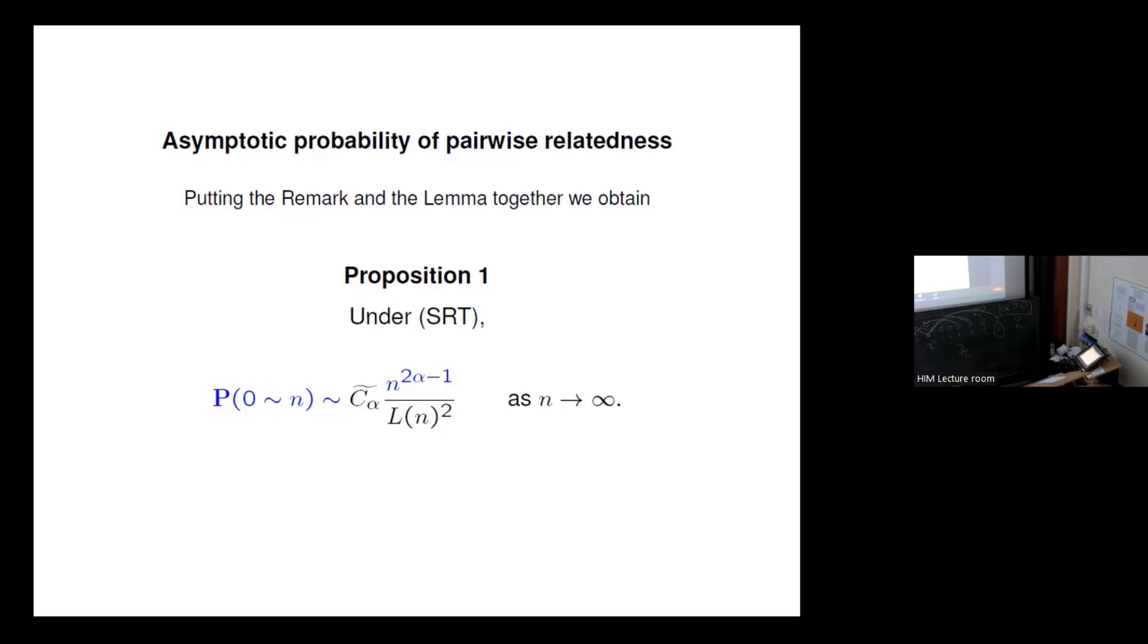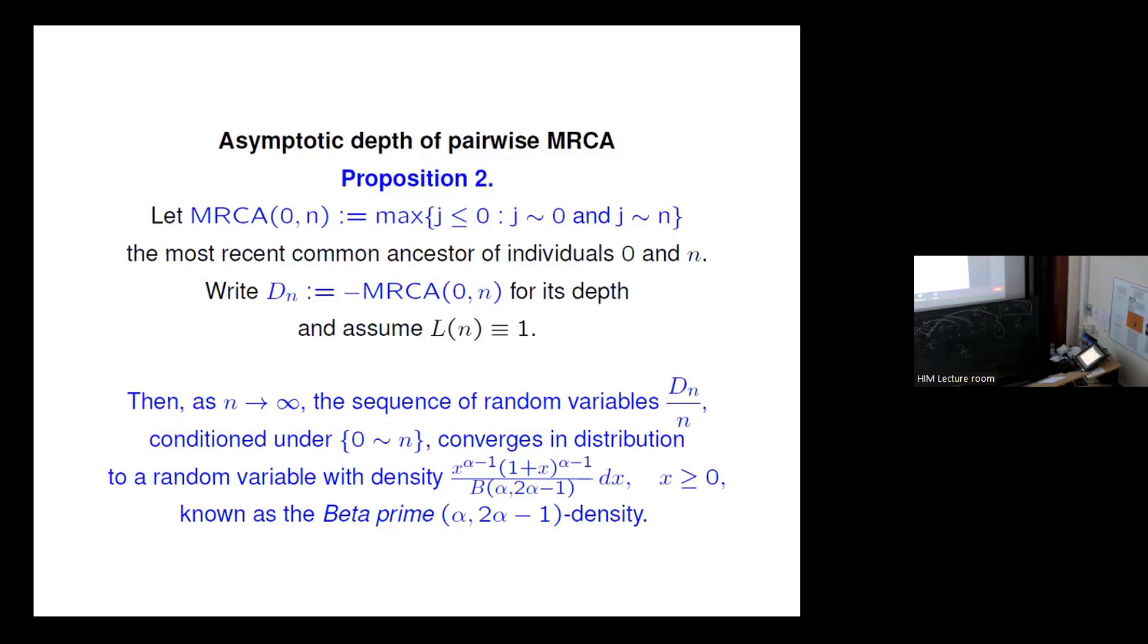Okay, and then putting the remark and lemma together, just gluing it very simply, we have this asymptotics. And it's a nice asymptotics because we now have n to the 2 alpha minus 1, since we are in the regime alpha between zero and one half, this is still smaller than one. So the probability that zero and n are related decays in a controlled fashion.